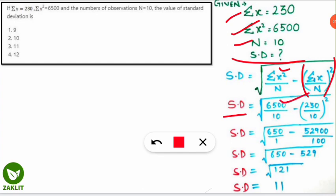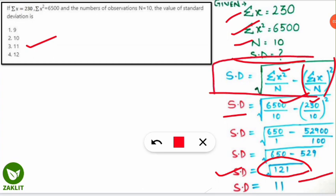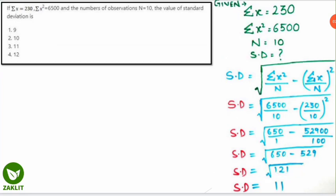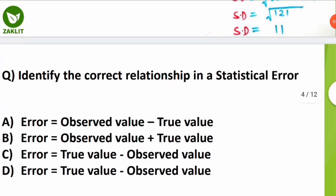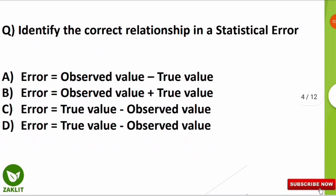Substituting the values: SD = √(6500/10 − (230/10)²). Solving, 230/10 = 23, and 23² = 529. Then 650 − 529 = 121, and √121 = 11. So the standard deviation is 11, which corresponds to option C. Note this formula to solve this type of problem.